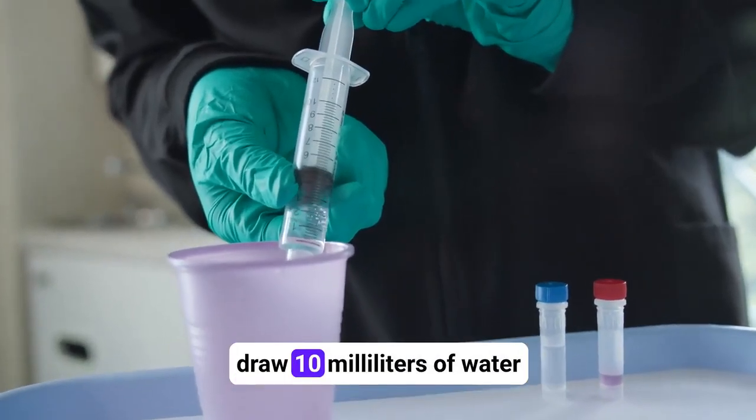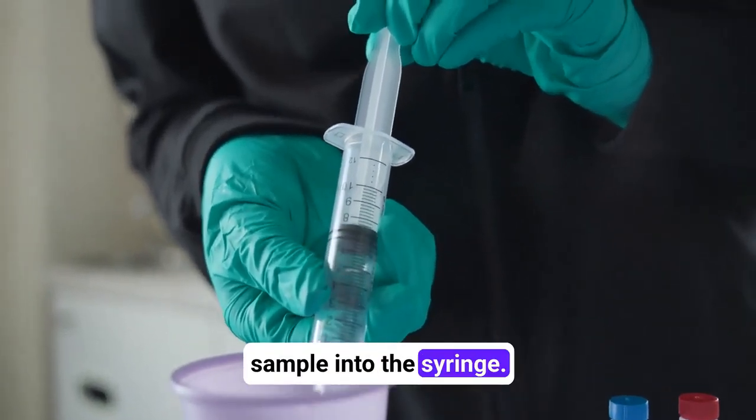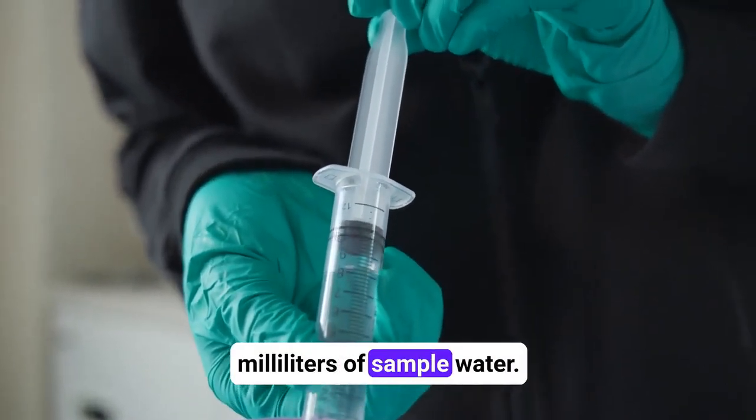Slowly pull back plunger and draw 10 milliliters of water sample into the syringe. Do not draw the full 20 milliliters of sample water.